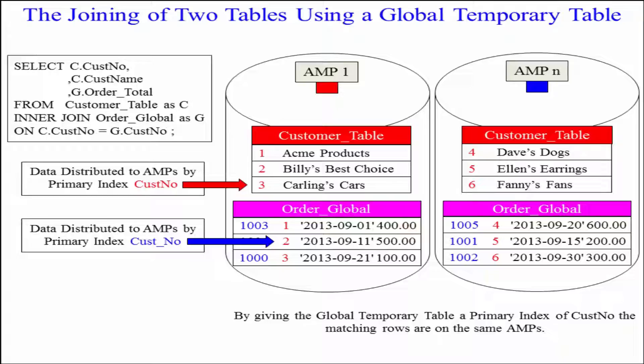Well now they both have a primary index of customer number and I'm joining on cusno equals cusno and now the matching rows will be on the same amps.